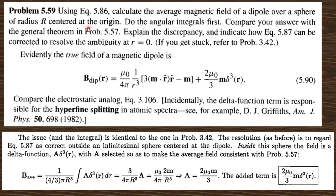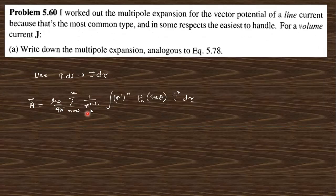Next question: using equation 5.86, calculate the average magnetic field of a dipole over a sphere of radius R centered at the origin — do the angular integral first, then compare. This is analogous to problem 3.43, and the relation proceeds as before. You can work this one out yourself.